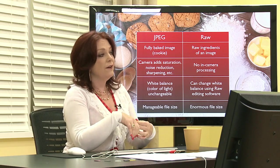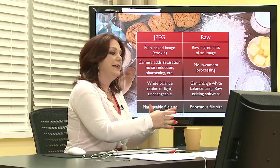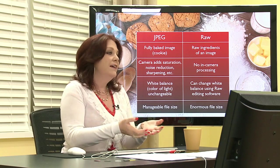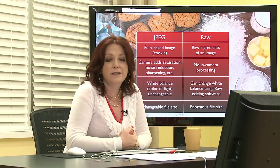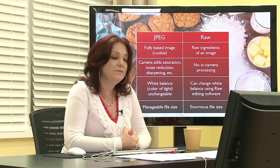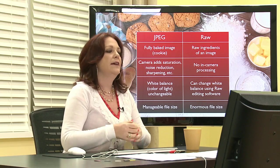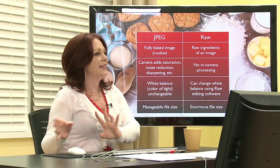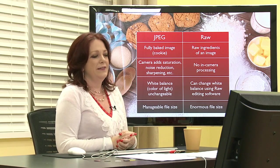If you compare raw ingredients for cookies with an actual baked cookie, think about how versatile the ingredients are versus a cookie. What can you do to a cookie to change it? Not a whole lot — you could frost it, add sprinkles. That's about it. But with raw ingredients, you can take things out, add chocolate chips, add macadamia nuts. You can do all kinds of things with a raw image.